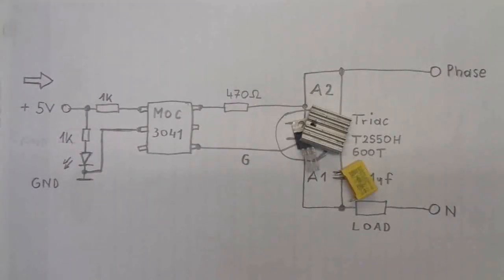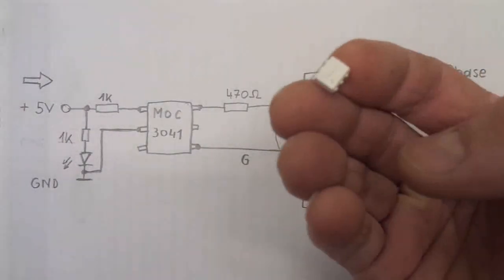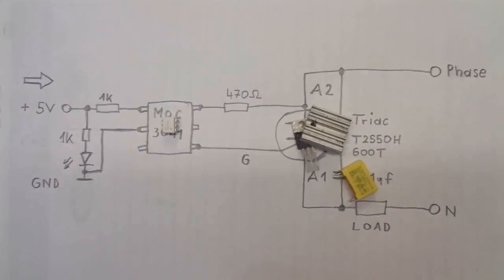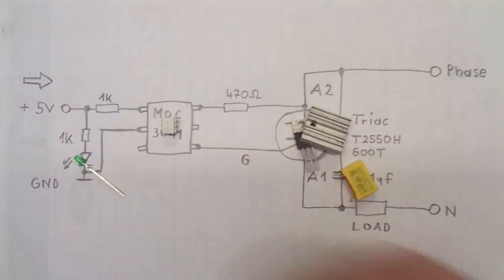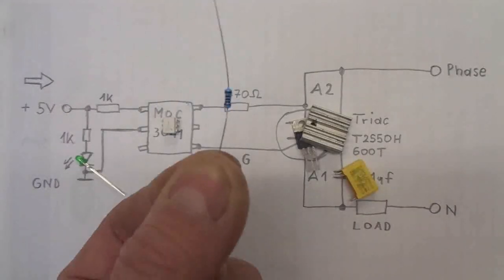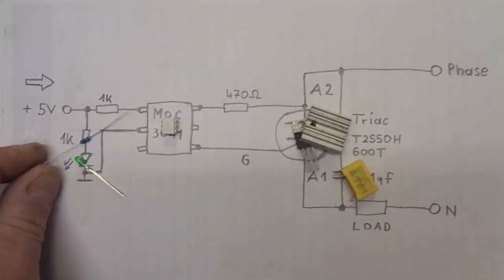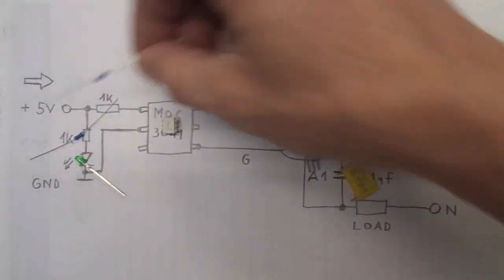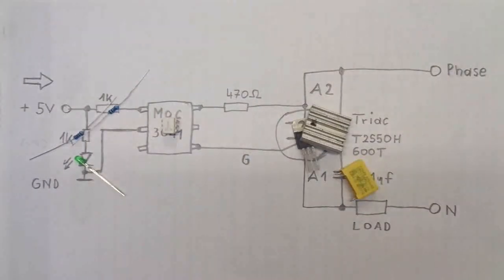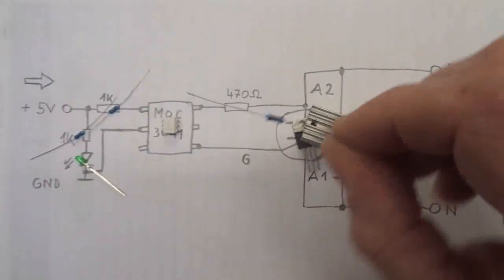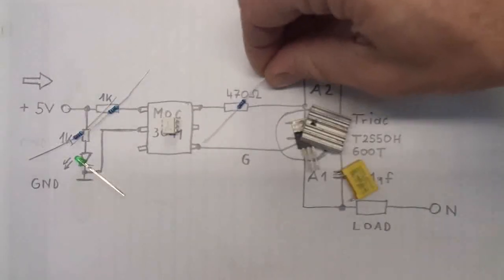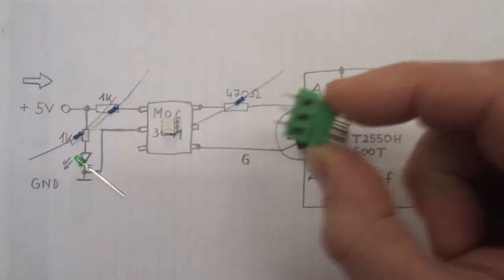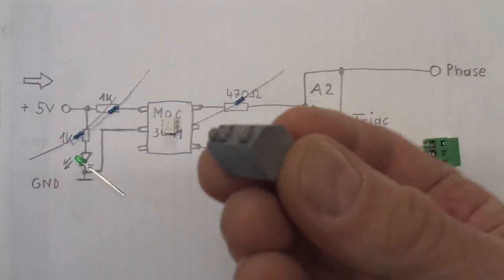We have here our opto coupler MOC 3041, our control LED, resistor for the LED, current limiting resistor for the opto isolator, current limiting resistor again for the opto isolator - 470 ohms - as well as some screw terminals or terminal block.